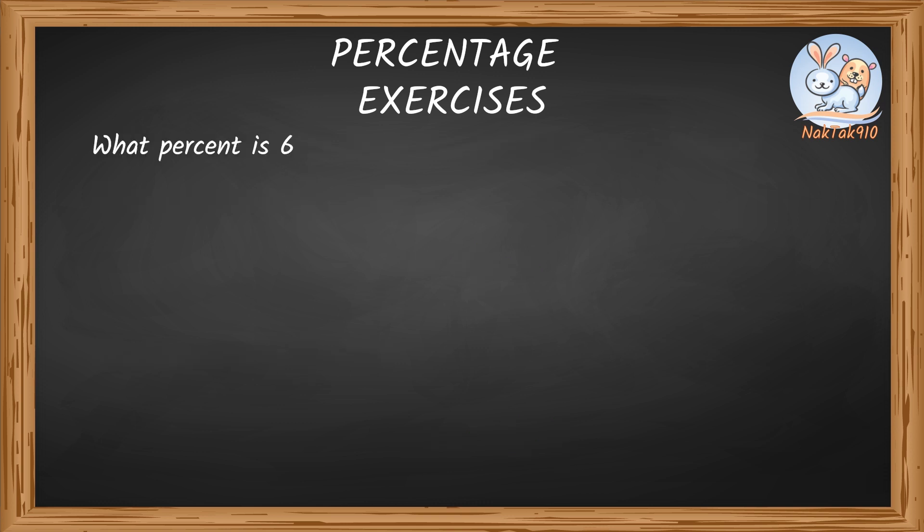What percent is 6 of negative 30? It's the same thing. x percent of negative 30 is 6, which can be written as x percent of negative 30 equals 6. x divided by 100 times negative 30 equals 6. Finally, x equals negative 6 times 100 divided by 30, which is nothing but negative 600 divided by 30, which is negative 20%.